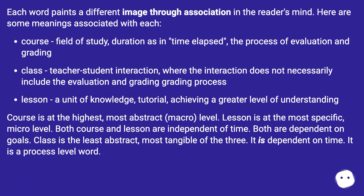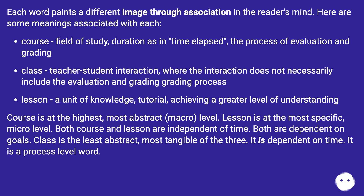Each word paints a different image through association in the reader's mind. Here are some meanings associated with each. Course: field of study, duration as in time elapsed, and the process of evaluation and grading. Class: teacher-student interaction, where the interaction does not necessarily include the evaluation and grading process. Lesson: a unit of knowledge, tutorial, achieving a greater level of understanding. Course is at the highest, most abstract or macro level. Lesson is at the most specific, micro level.